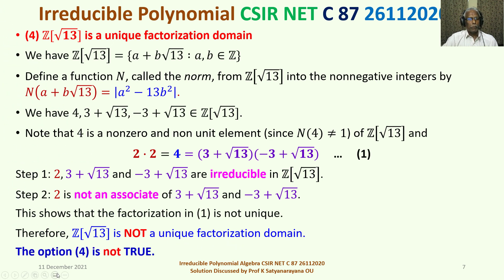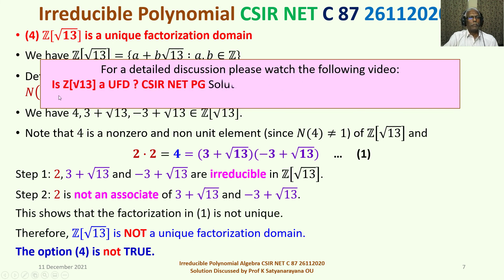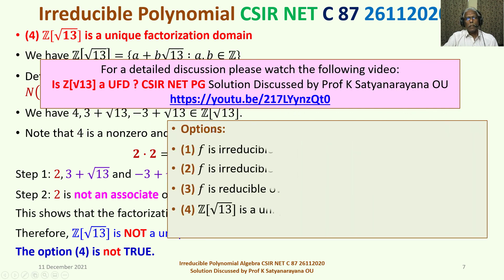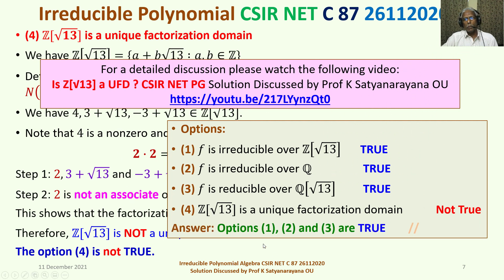Option 4 is not true. For a detailed discussion showing Z(√13) is not a unique factorization domain, please consult the linked video titled 'Is Z(√13) a UFD?' with the YouTube link provided. In summary, Options 1, 2, and 3 are true, and Option 4 is not true. That is the discussion of the problem from the section Algebra based on irreducible polynomials. I wish you all the best. Thank you.